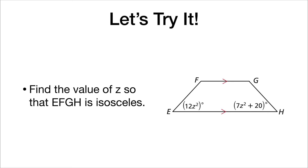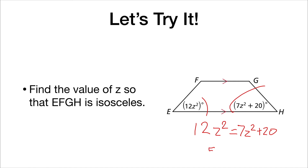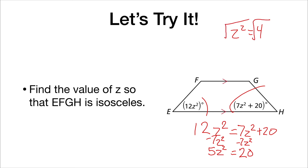Now we're finding the value of Z so that EFGH is an isosceles trapezoid. For EFGH to be isosceles, the two base angles must be congruent. So we set 12Z² equal to 7Z² plus 20. Subtract 7Z² from each side to get 5Z² equals 20. Divide by 5 to get Z² equals 4, then take the square root, giving Z equals positive or negative 2.